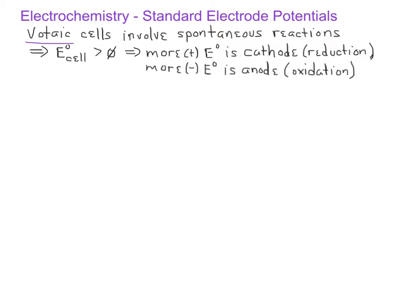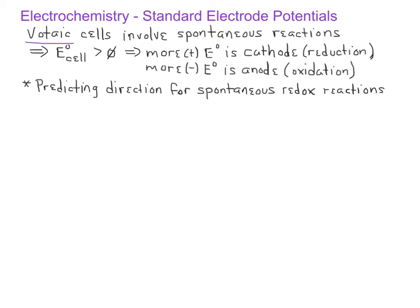This leads us to another interesting use of the electrode potentials in Table 18.1. Specifically, we can look at any two half-reactions and predict which direction will be the spontaneous direction for the redox reaction. We do this because we know the half-reaction with the more positive electrode potential will undergo reduction, and the half-reaction with the more negative electrode potential will undergo oxidation.